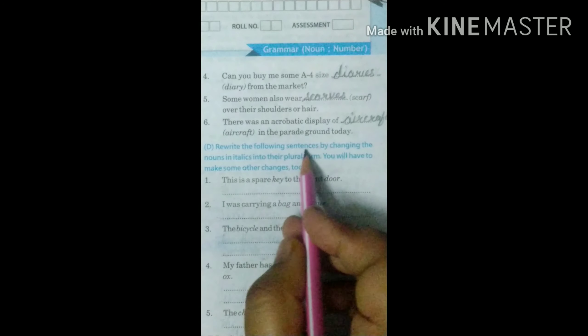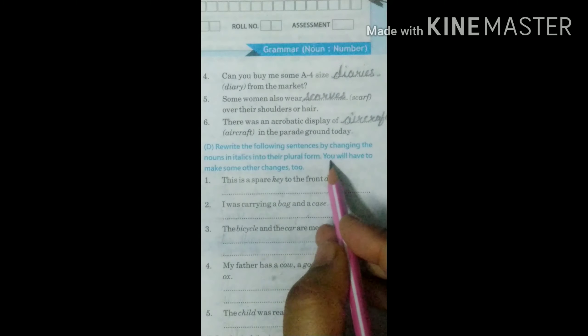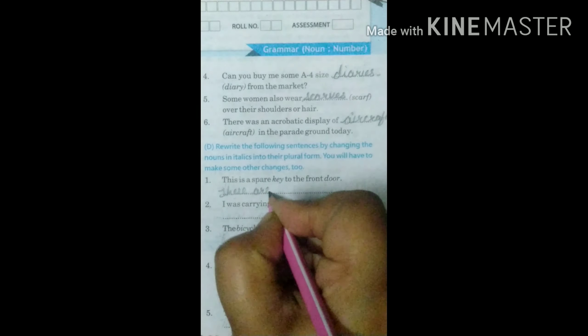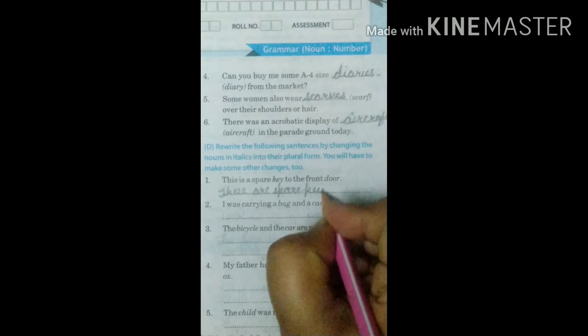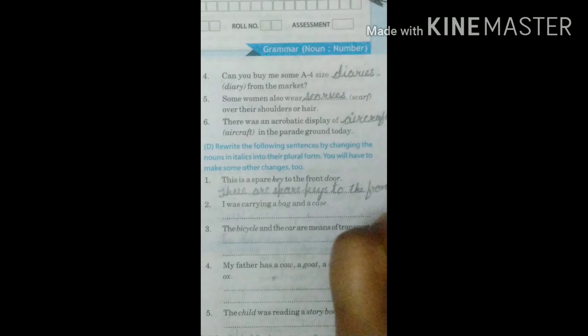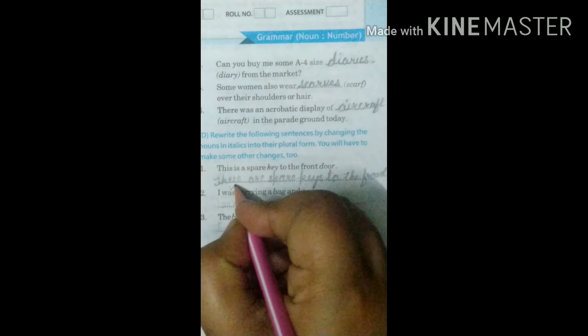D part. Rewrite the following sentences by changing nouns in italics into their plural form. You will have to make some other changes too. This is a spare key to the front door. What will be the answer? These are spare keys to the front doors.